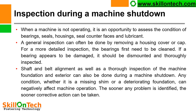Inspection during a machine shutdown. When your plant and machine are under shutdown, we can inspect the bearings. It is an opportunity to assess the condition of bearings, seals, housing, seal counter-faces, and lubricant. A general inspection can often be done by removing a housing cover or cap. For a more detailed inspection, the bearing first needs to be cleaned; if a bearing appears damaged it should be dismounted and thoroughly inspected. Shaft and belt alignment as well as inspection of the machine foundation and exterior can also be done. Any condition — whether a missing shim or a deteriorating foundation — can negatively affect machine operation. All bearings shall be inspected and, as per their condition, action shall be initiated for replacement.